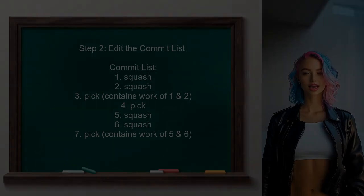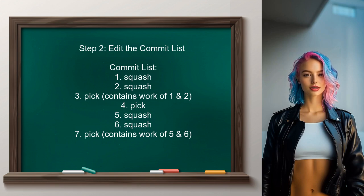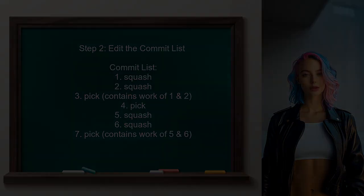Once in the interactive rebase editor, you will see a list of commits. Identify the commits you want to squash and arrange them accordingly. In this case, the goal is to squash commits 1 and 2 into 3, and commits 5 and 6 into 7.